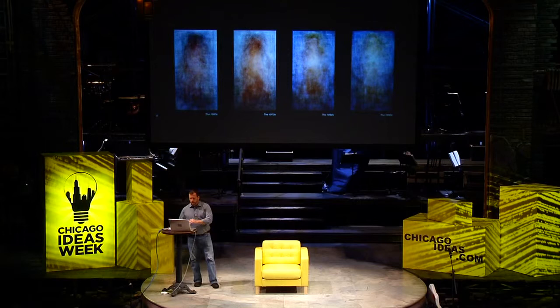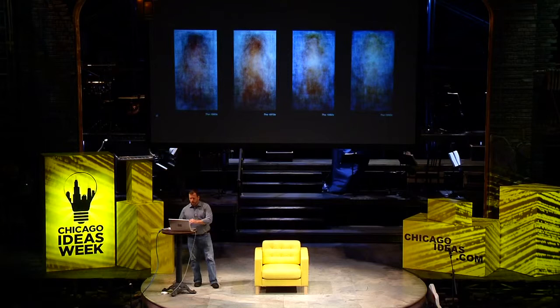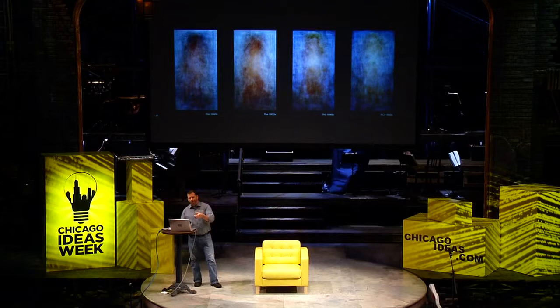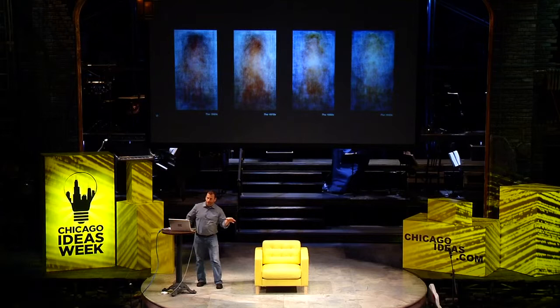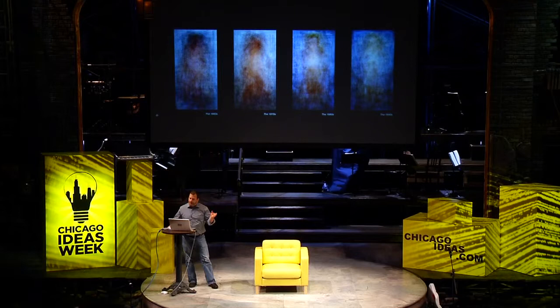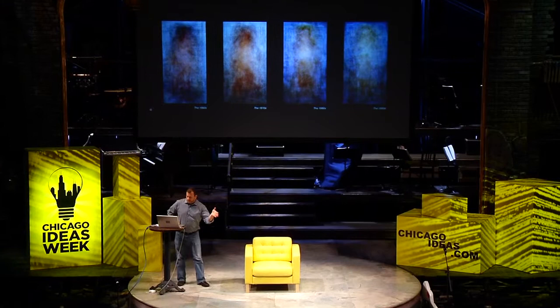These are four large photographic prints, each about human scale. The source material is very different. This is every Playboy centerfold from the 1960s, the 1970s, the 1980s, and the 1990s. I've taken 120 images — 10 years worth of centerfolds — and mathematically compressed them into a single image. So you have this not-safe-for-work content, and then you have these ghostly remainders that come out of it. What's also interesting is there's an evolution in the way these portraits have been taken.